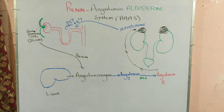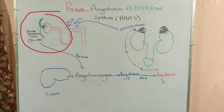Renin is produced from the juxtaglomerular cells, also known as JG cells. These JG cells are located at a very particular location — along the afferent arterioles near the glomerular capillaries. Because of changes in the body, these juxtaglomerular cells create a hormone which we call renin — R-E-N-I-N.